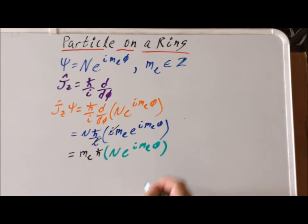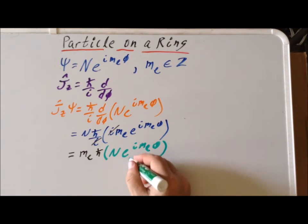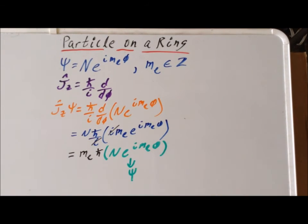We notice two things. The expression in green is simply our eigenfunction returned, and the expression in front, m sub l h-bar,